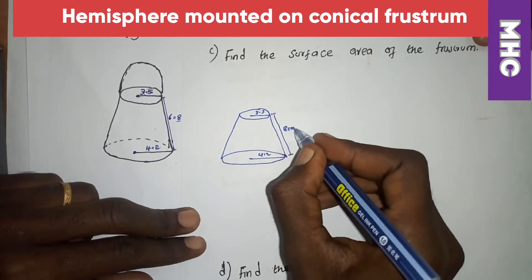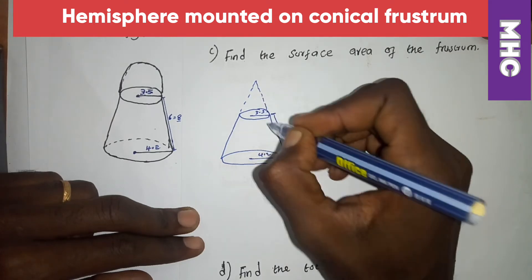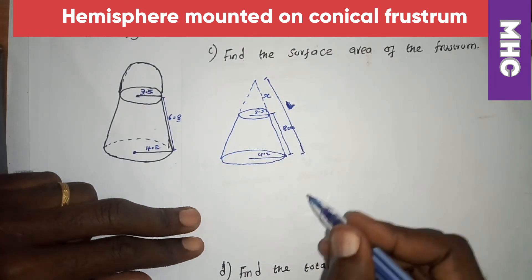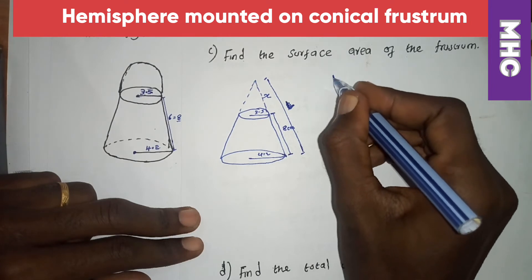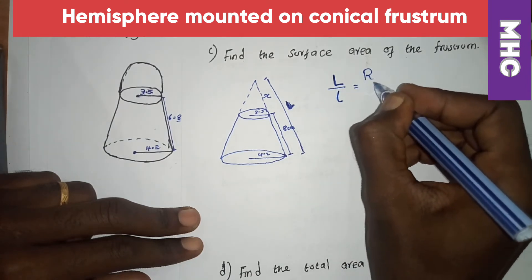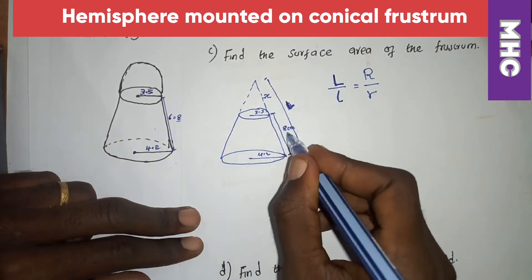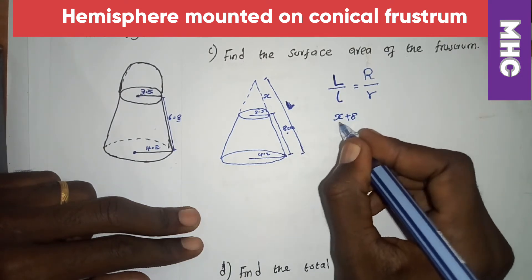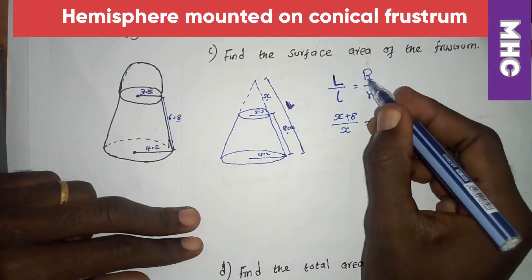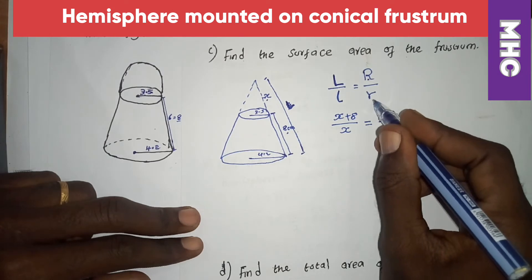We complete the frustum by extending lines to form a full cone. Let the smaller slant height from apex to the top circle be x. Using the similarity method: the larger slant height over the smaller slant height equals the larger radius over the smaller radius. So (x + 8) / x = 4.2 / 3.5.